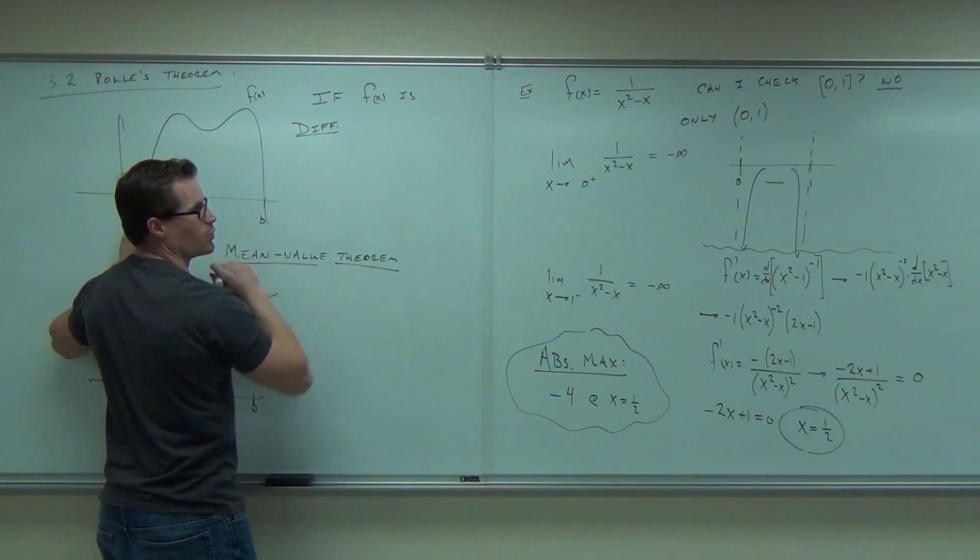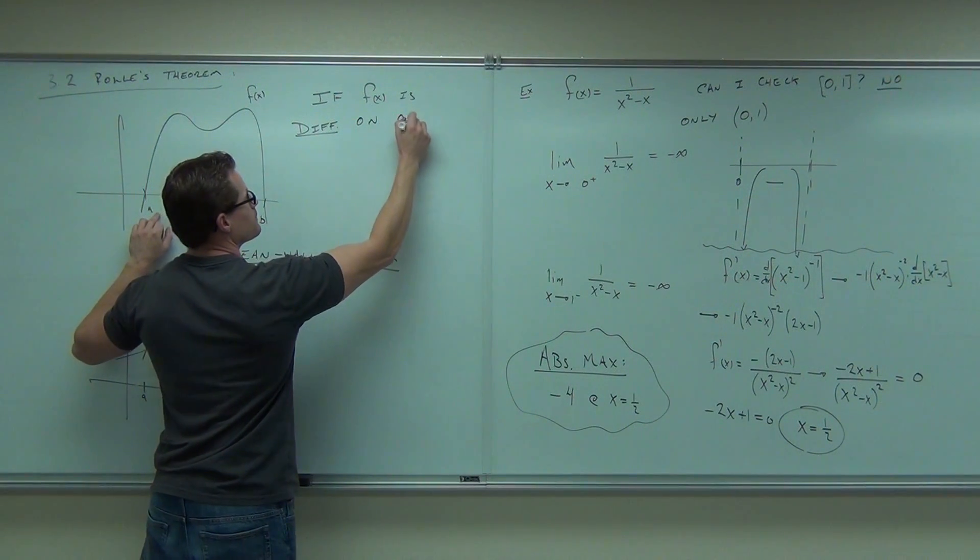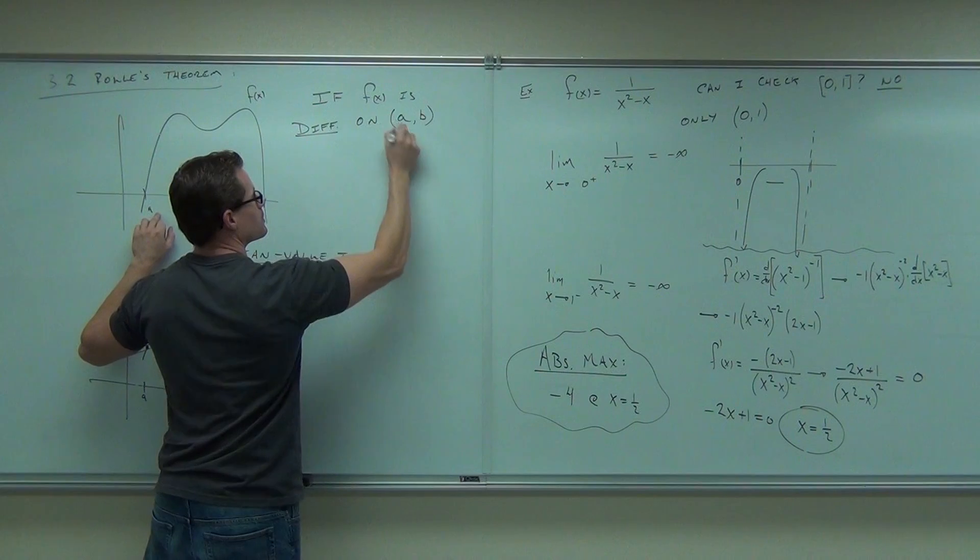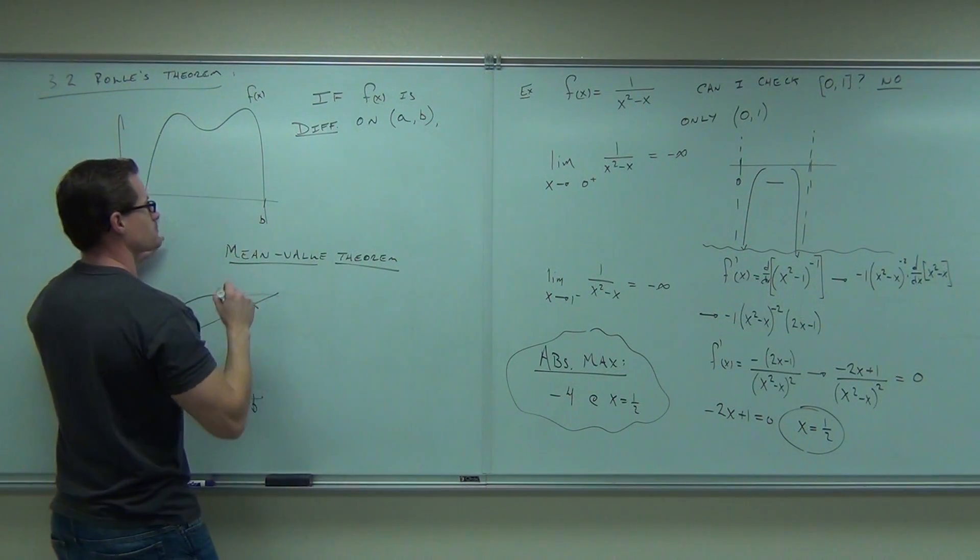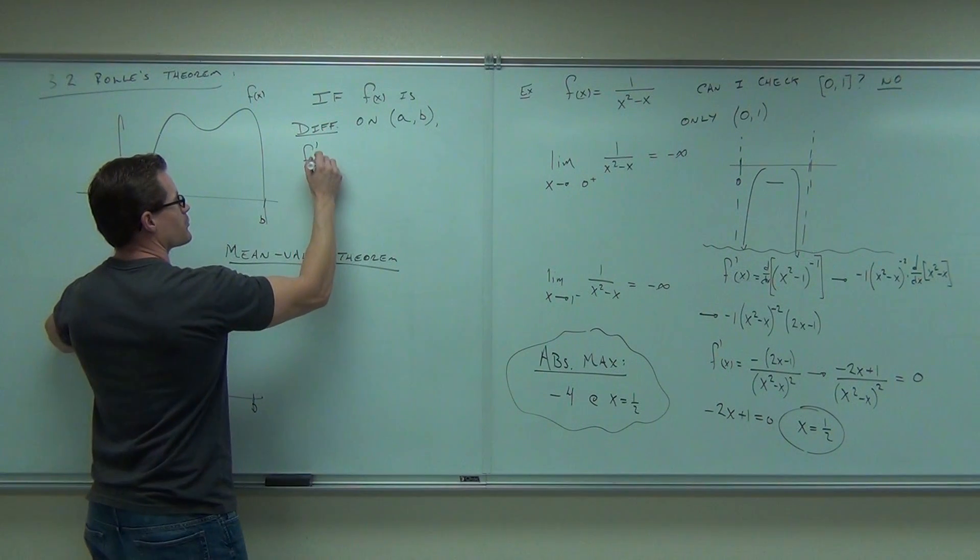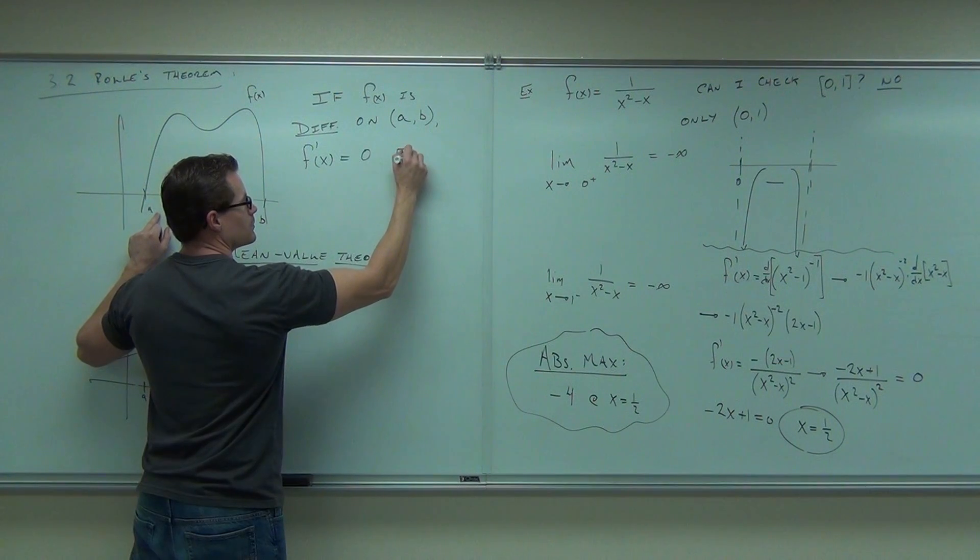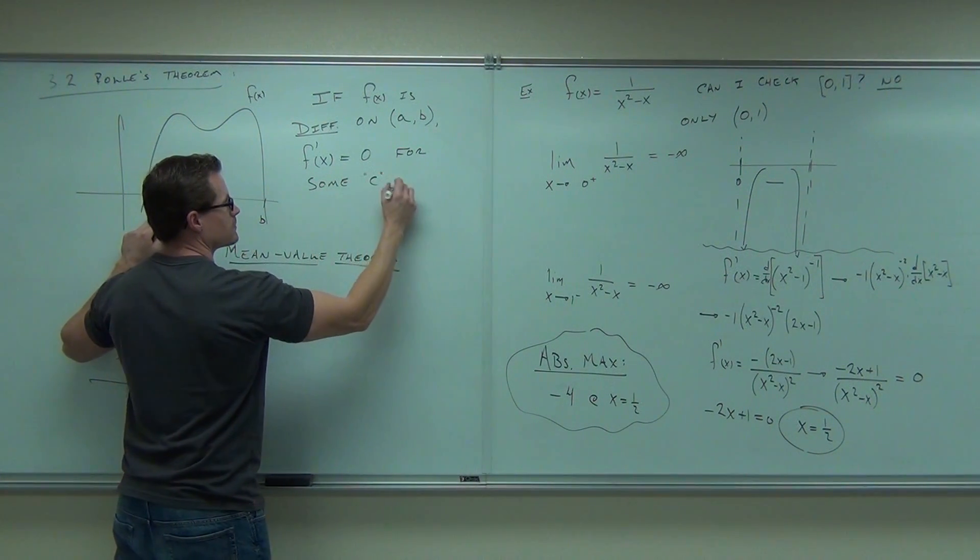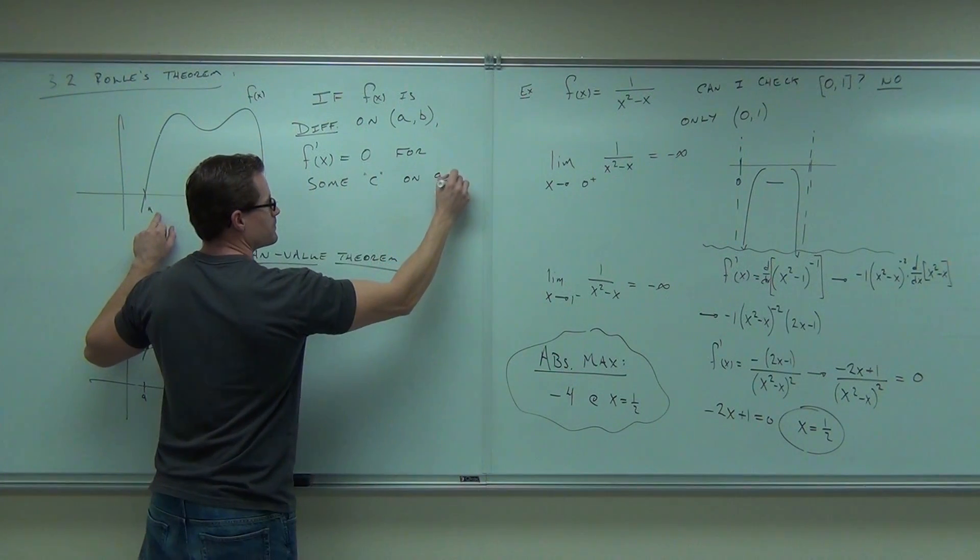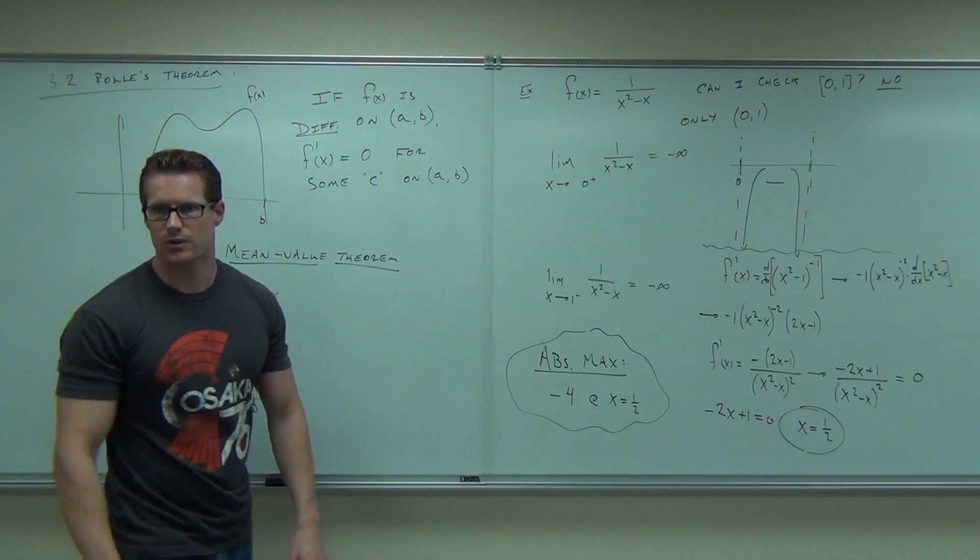If f of x is differentiable, more than continuity, differentiable, on a, b, then f prime of x will equal zero for some point on a, b. That must be true. And that's a fancy way of saying what I just said.